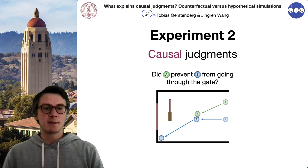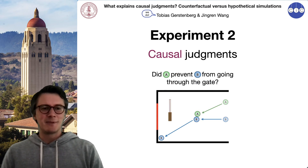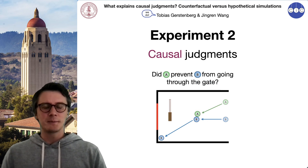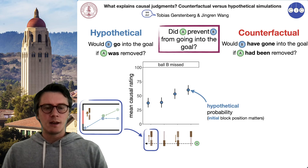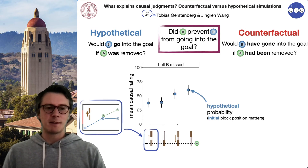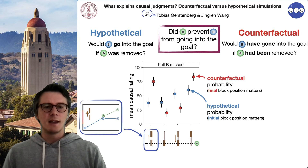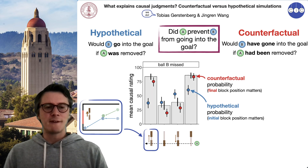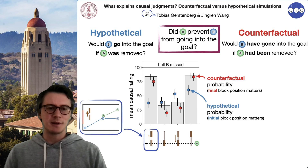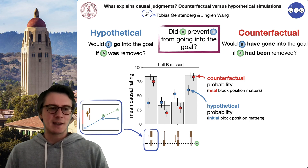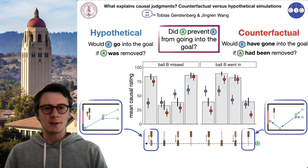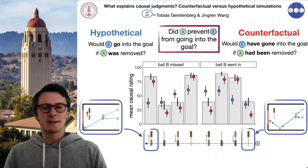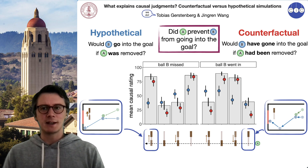We can now ask what explains participants' causal judgments — whether their judgments are better explained by hypothetical or by counterfactual probabilities. What we found is that participants' judgments are very well explained by counterfactual probabilities and not by hypothetical probabilities — saying, for example, for the clip on the left, that yes, A prevented B from going into the goal. The same also held for situations in which ball B ended up going through the goal. Again, participants' judgments are better explained by counterfactual probabilities rather than hypothetical probabilities.